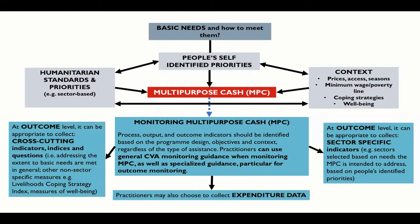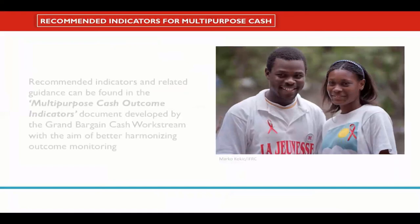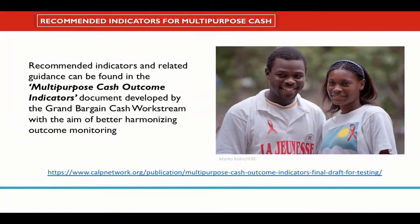Practitioners may also choose to collect expenditure data. To help resolve some of the issues with outcome monitoring and provide a basis for better and more consistent measurement of the outcomes to which MPC contributes, work was undertaken under the Grand Bargain cash workstream to develop MPC outcome indicators. The first draft for testing was released in mid-2019 and contains a core minimum group of indicators, along with guidance and recommendations on how to select and use them. The aim is to collect feedback and undertake a revision in 2021, with the extent of revision depending on feedback received.